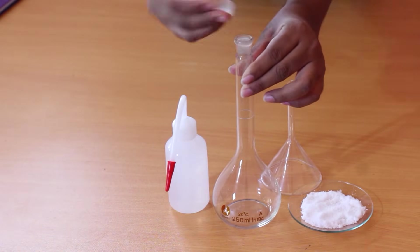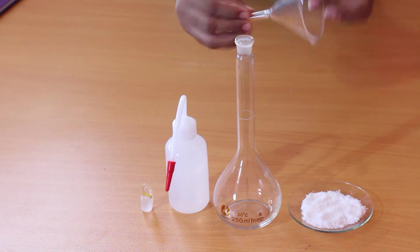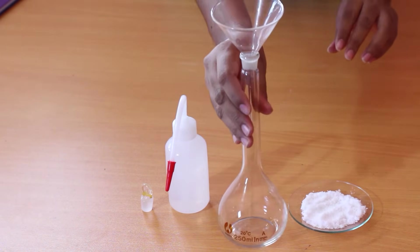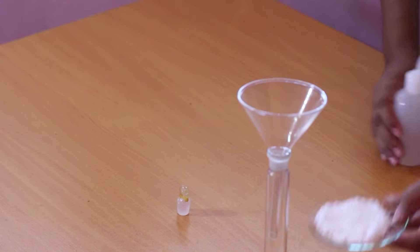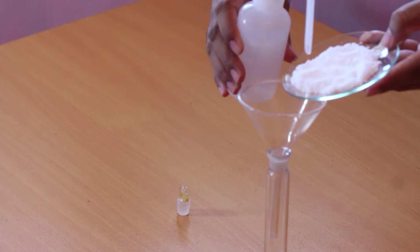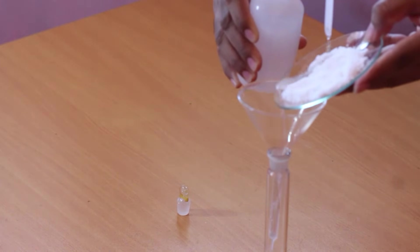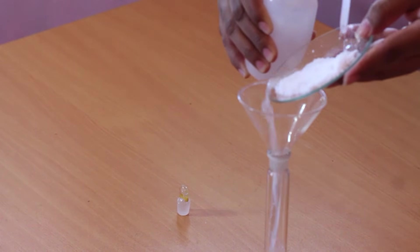The first step is to remove the lid of the volumetric flask, and then we put a clean funnel into the volumetric flask. Here we have sodium chloride in our watch glass. We use the wash bottle to wash out this sodium chloride into the funnel. Through the funnel, it flows into the volumetric flask.